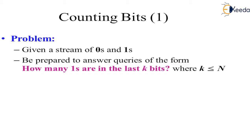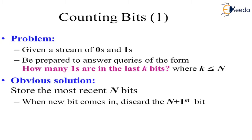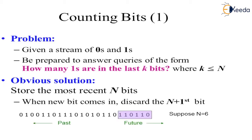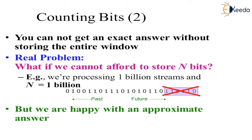People may ask: how many ones are there in the last k bits, where k is less than or equal to n? The solution is to store the most recent n bits; when a new bit comes in, discard the n+1st bit — meaning older bits are discarded. We keep a window size n equal to 6. However, you cannot get an exact answer without storing the entire window — that is the biggest problem.